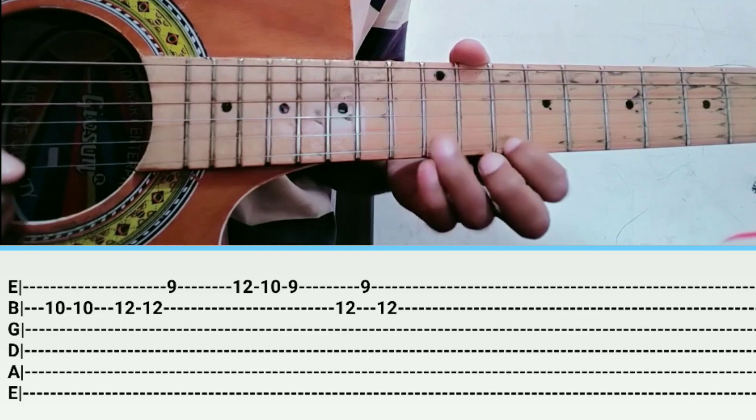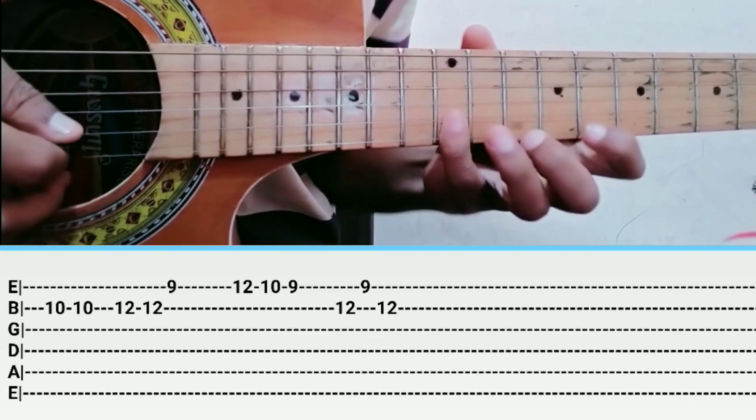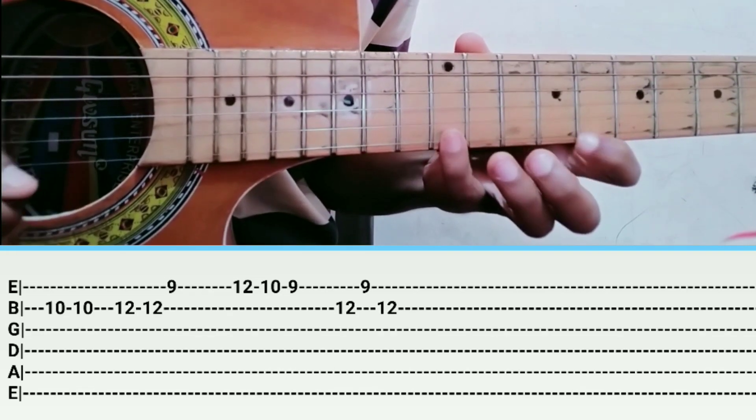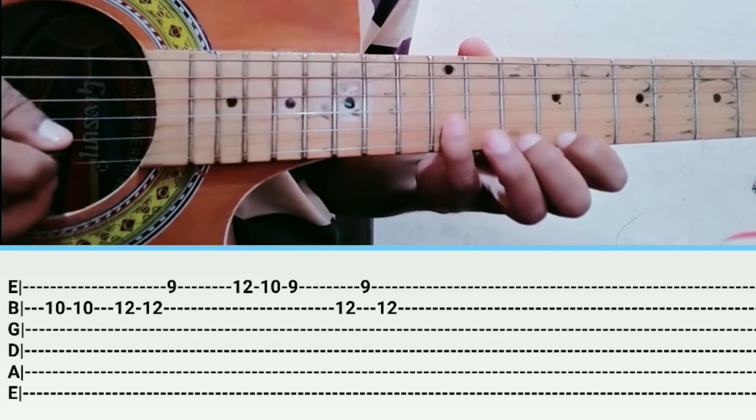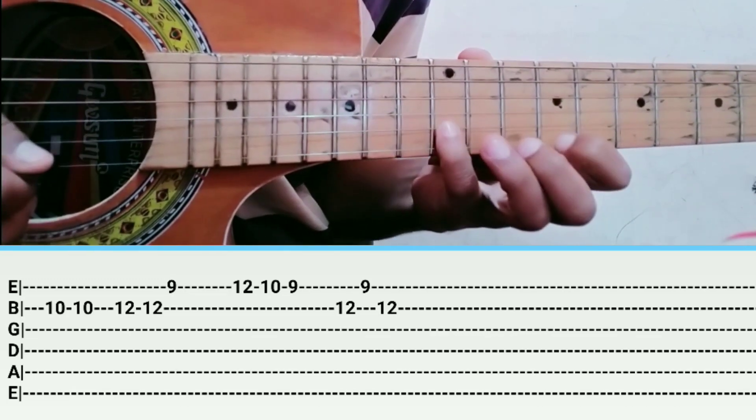So what are you doing? 10-10, B string, 12-12, B string, then 9, B string, 12-10-9, B string, then 12, B string, then 9, B string, then 12, B string.